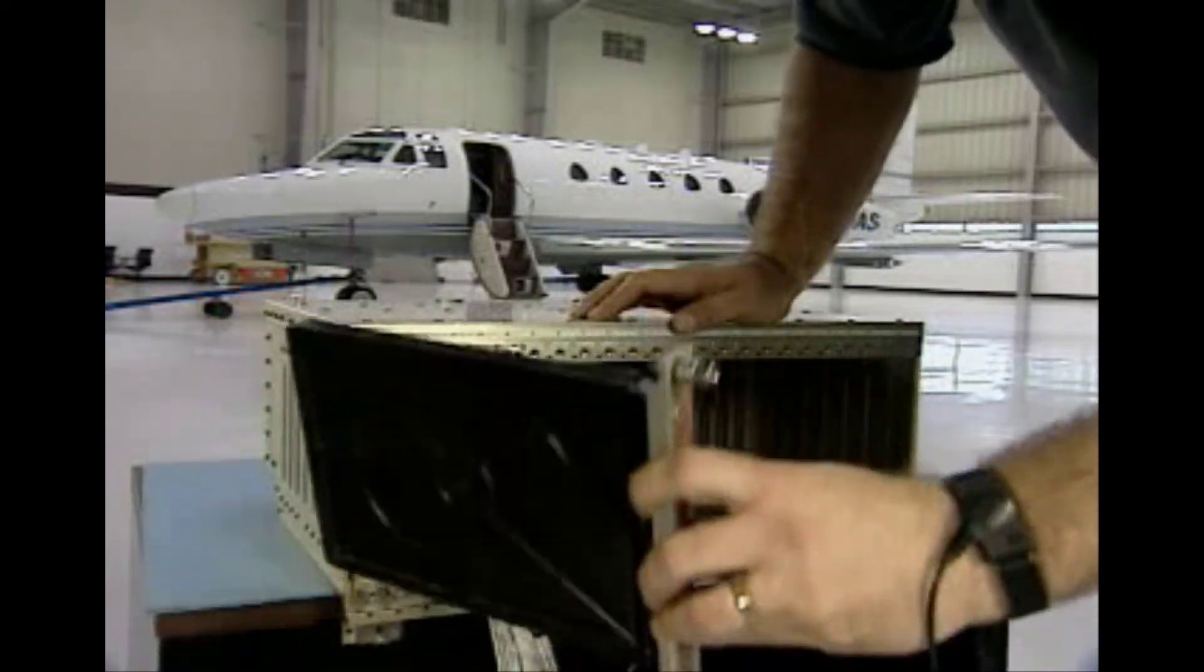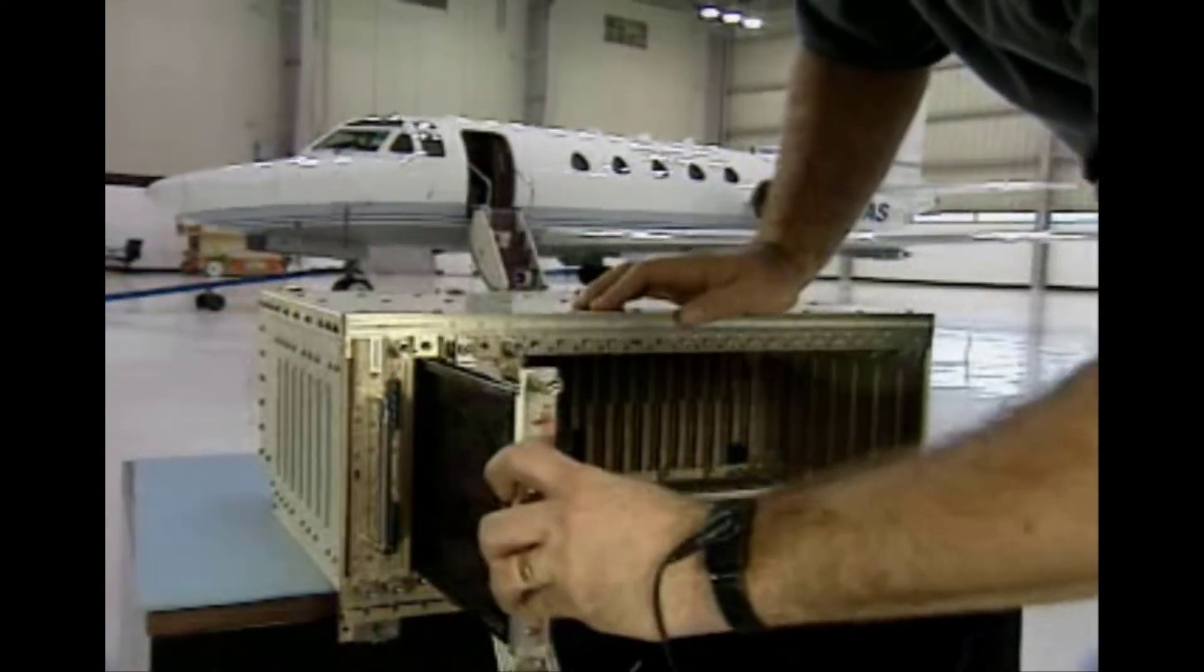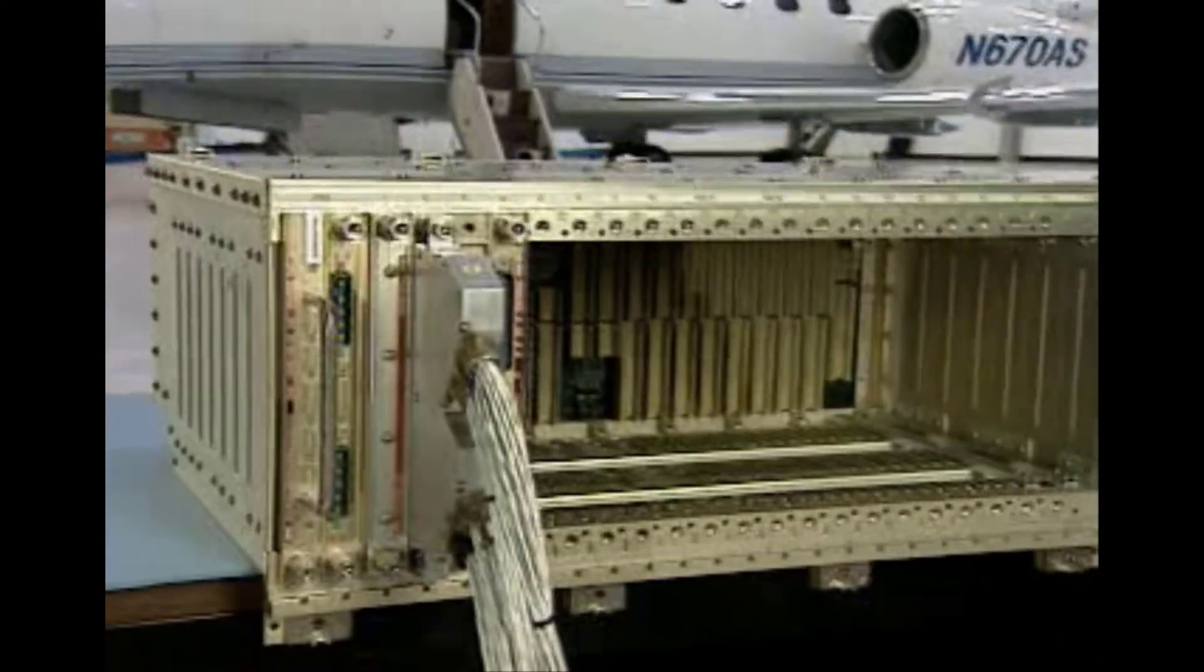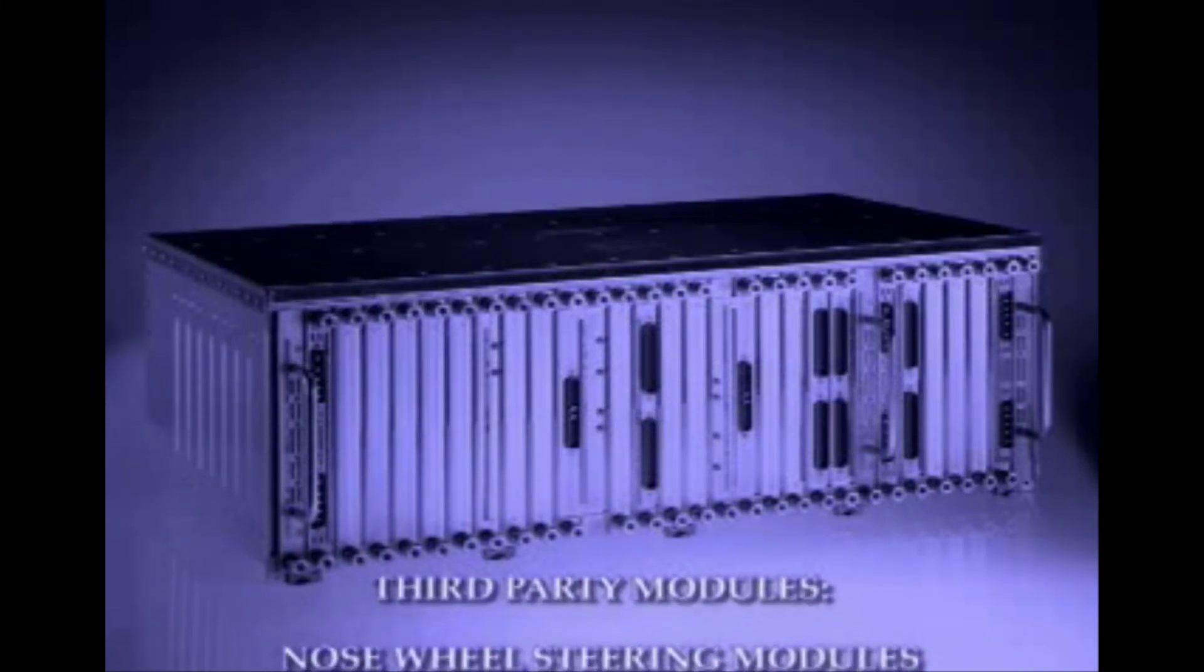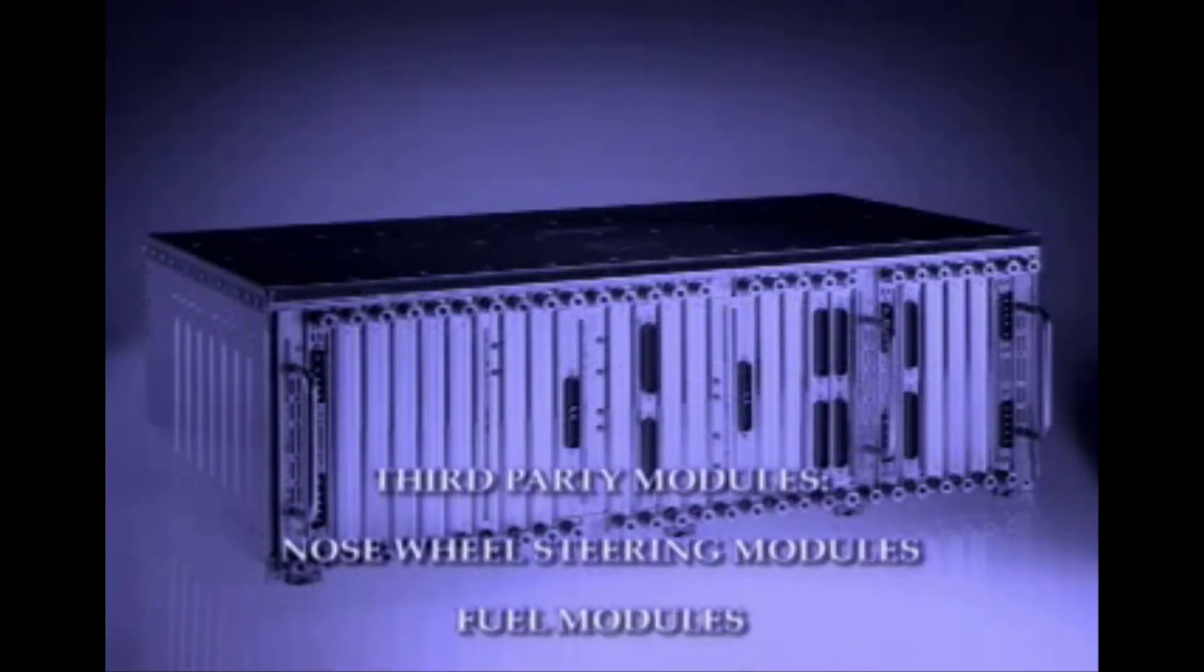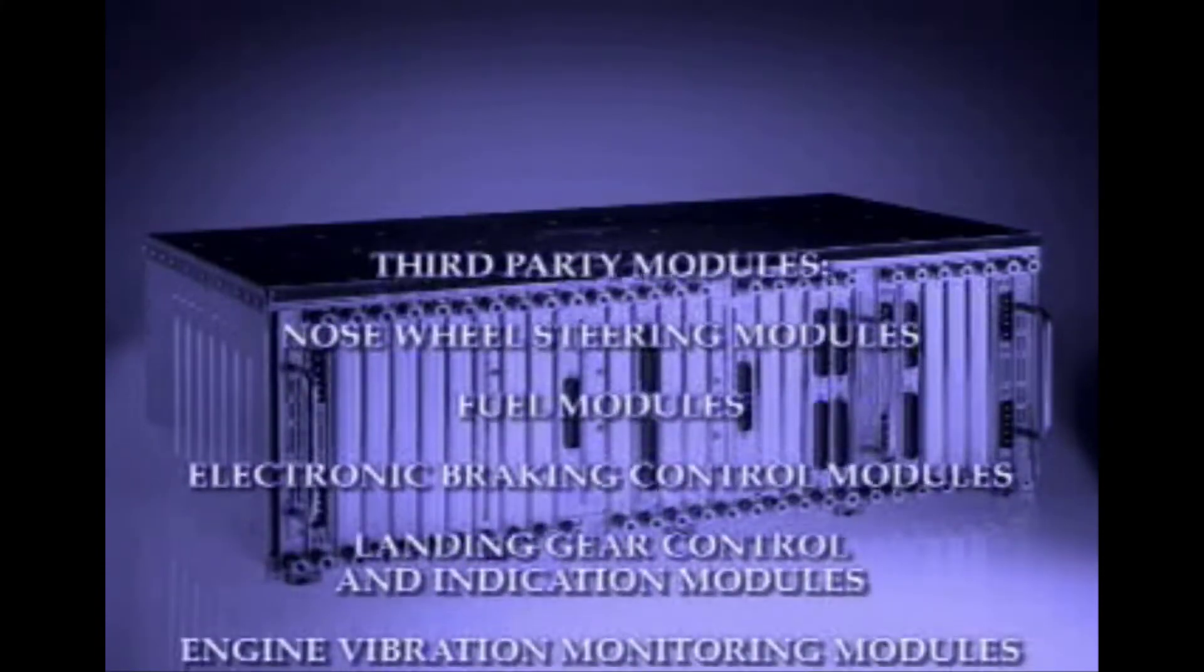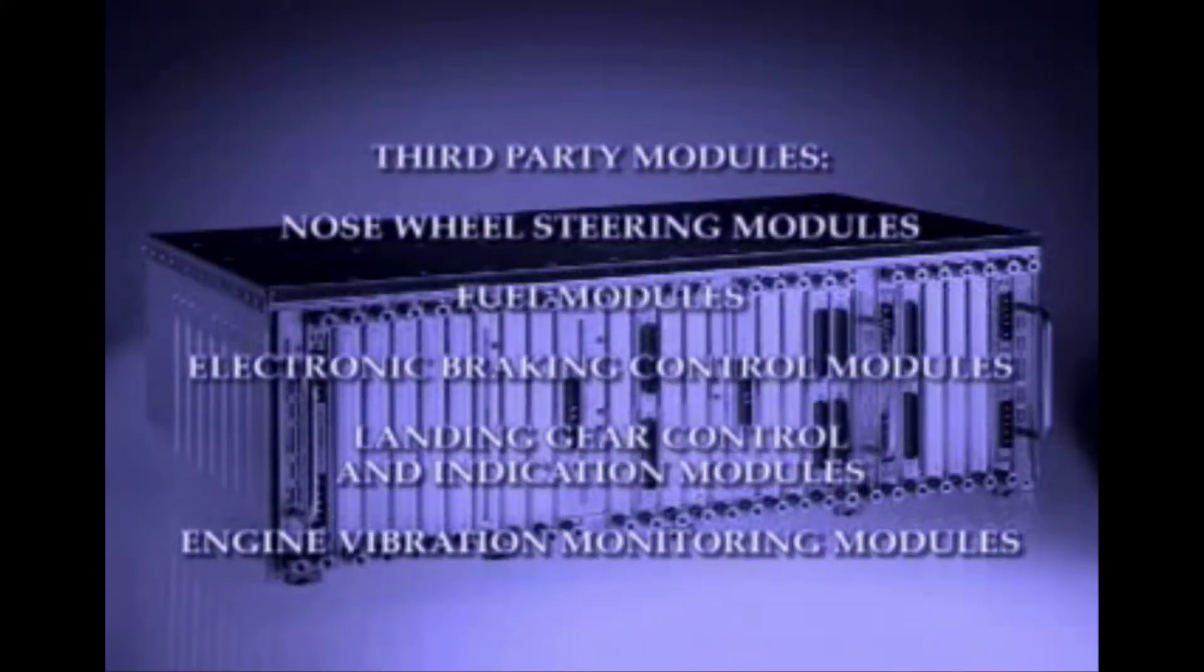In addition to these modules, air management modules are used to populate vacant slots. These modules are designed to direct the airflow inside the MAU. MAUs may also host third-party modules, such as nose wheel steering modules, fuel modules, electronic braking control modules, landing gear control and indication modules, and engine vibration monitoring modules.